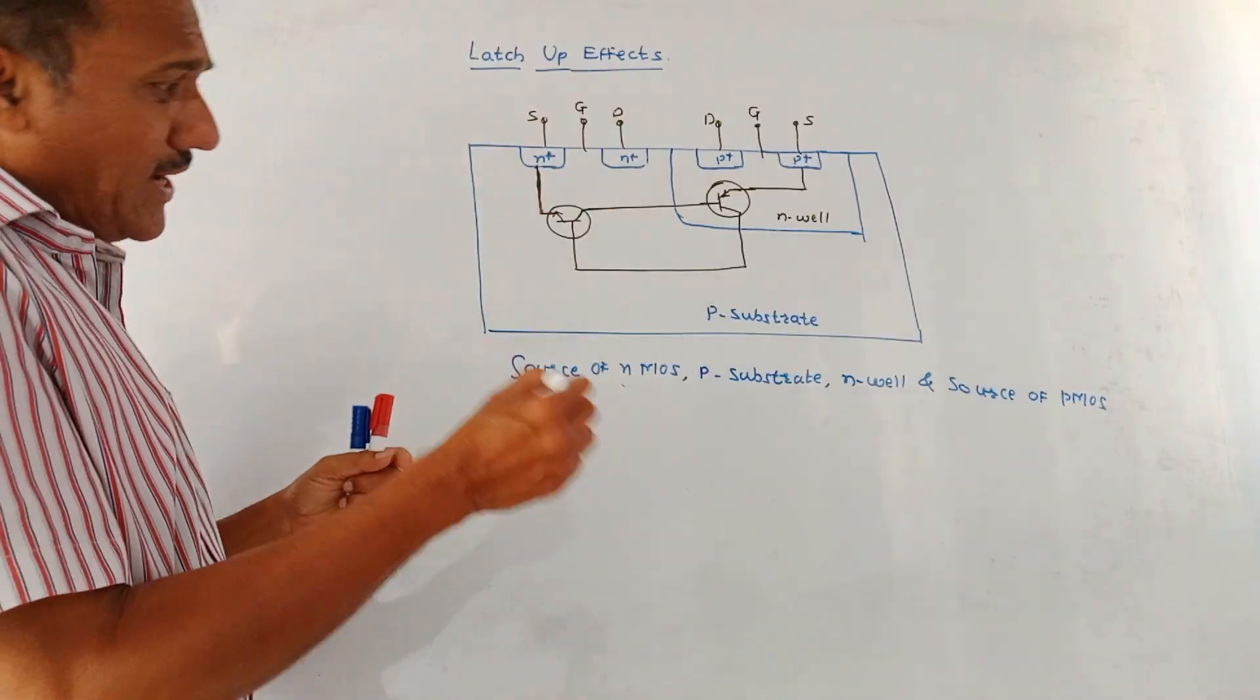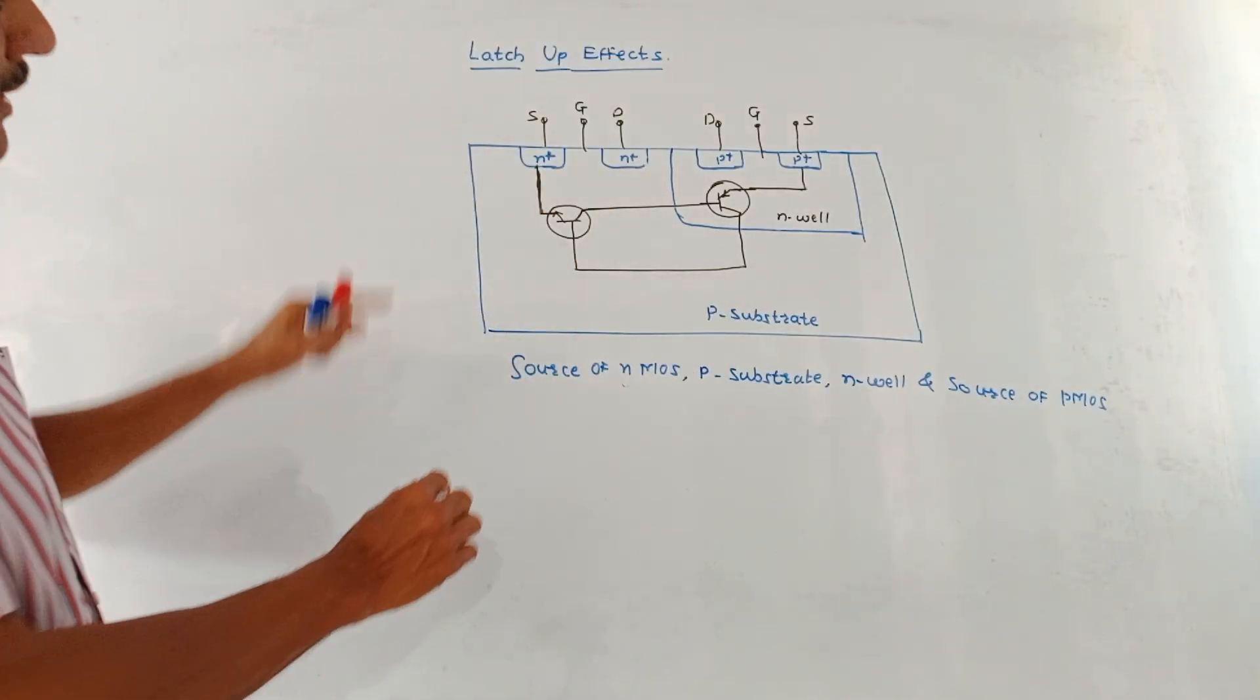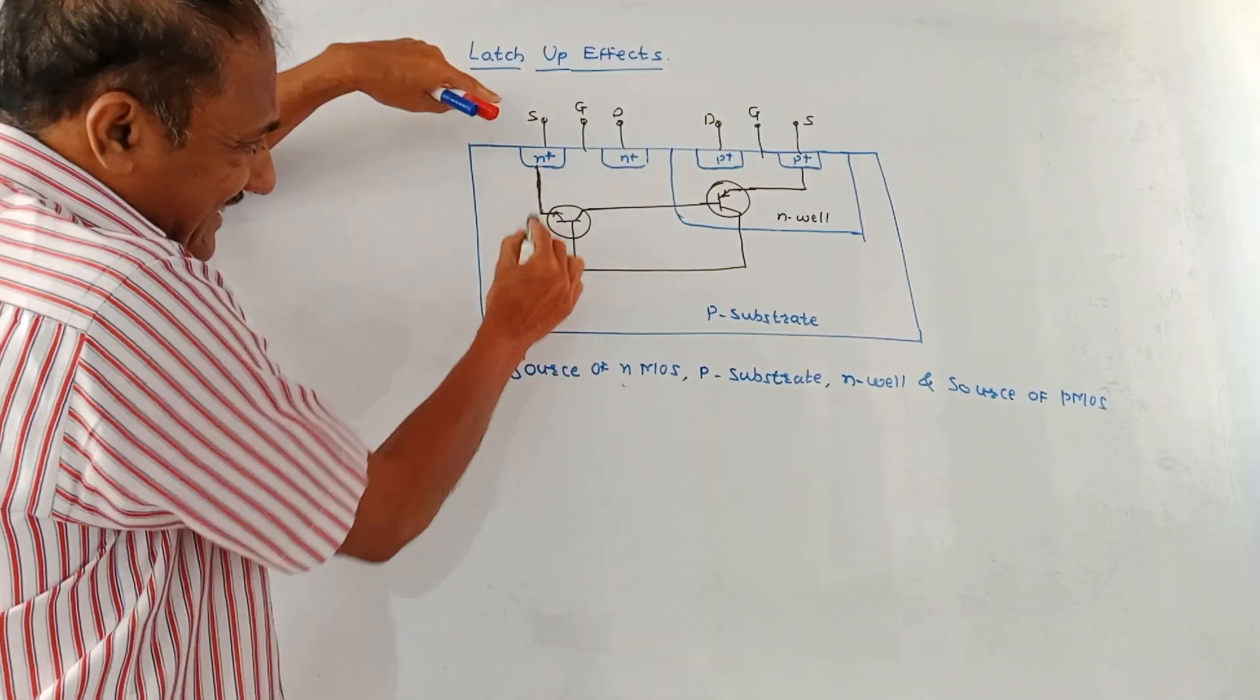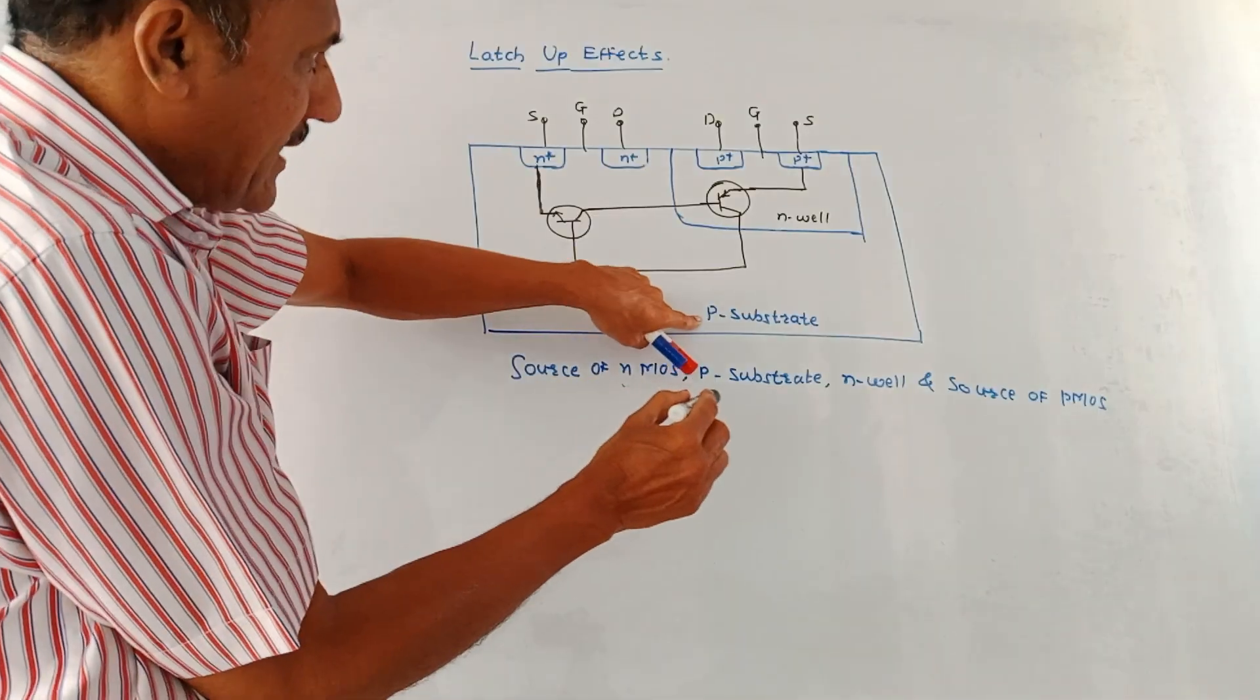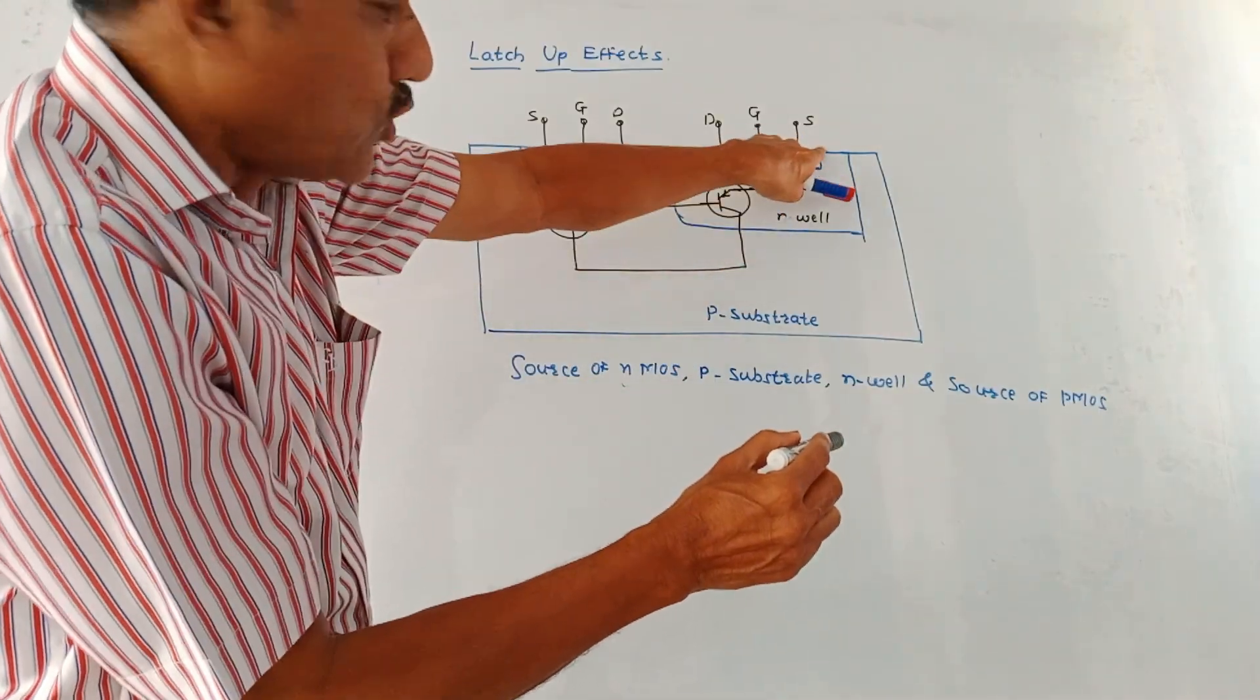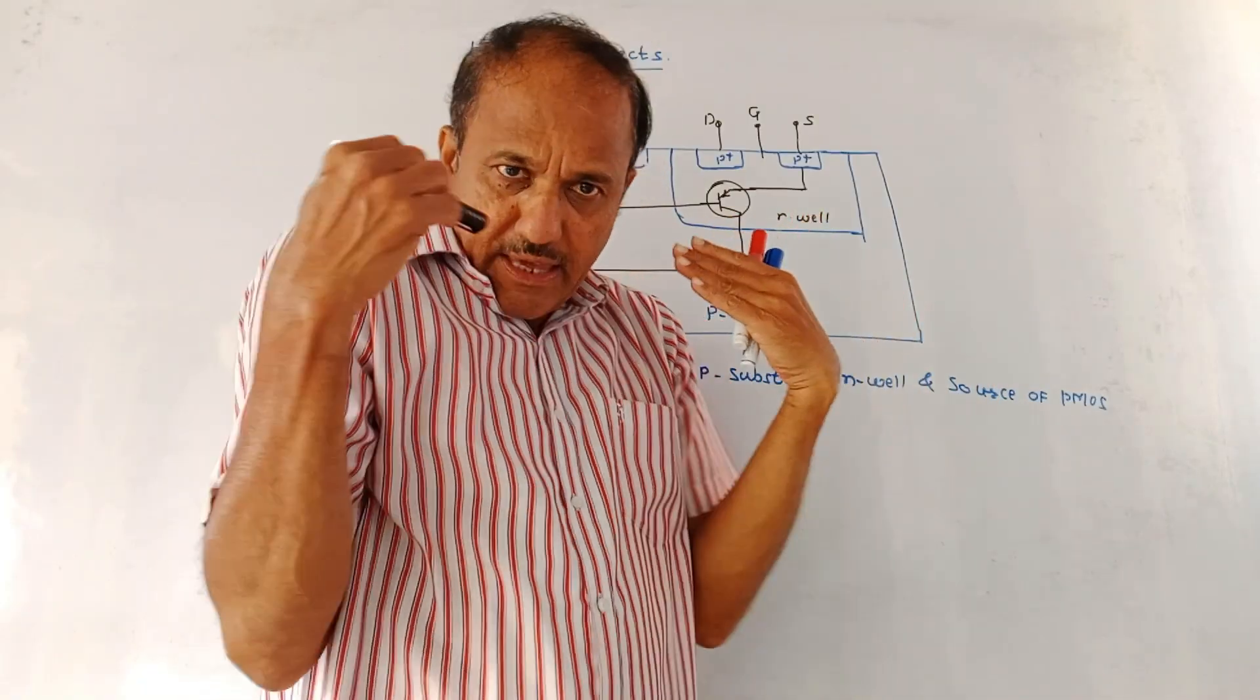Actually, the latch-up effect is created due to the source of NMOS. This is the NMOS due to source of NMOS, then P substrate, N-well, and then source of PMOS because of which the latch-up effects exist.